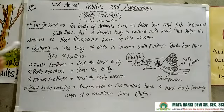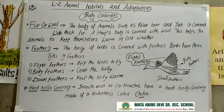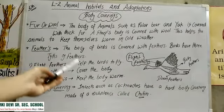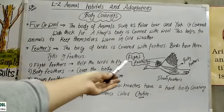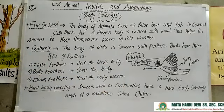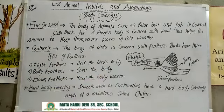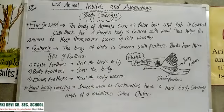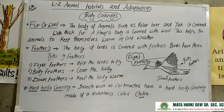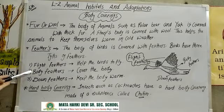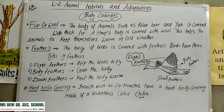Next is feathers. What are feathers? The body of birds is covered with feathers. Birds have three types of feathers. First is flight feathers, second is body feathers, and third is down feathers.